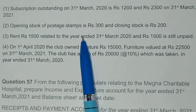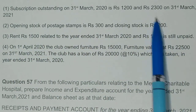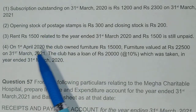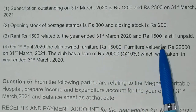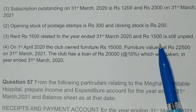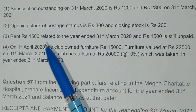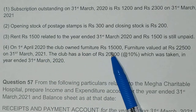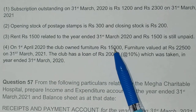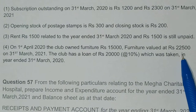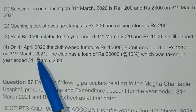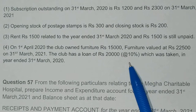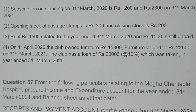Opening stock of postage and closing stock are the terms to use. For rent, the amount paid from the previous year was $1,500, and we haven't yet paid $1,500 from the previous year, so this amount will be deducted and the outstanding will be added. As of 1st April 2020, the club had furniture. On 31st March 2021, it was $22,500, and the club paid $20,000 including loan interest of $10,000.